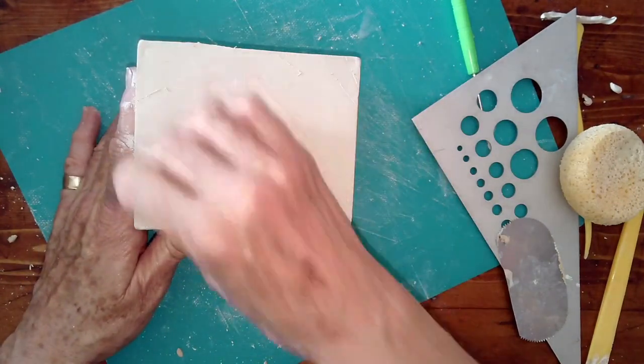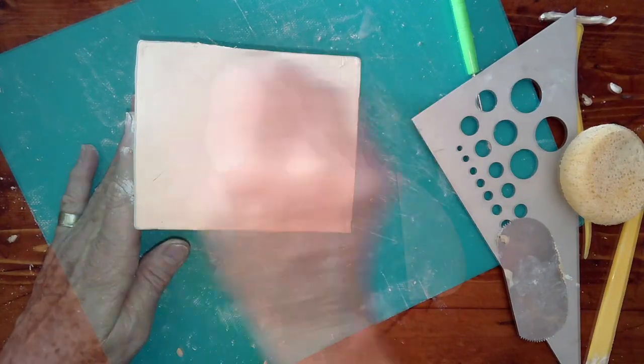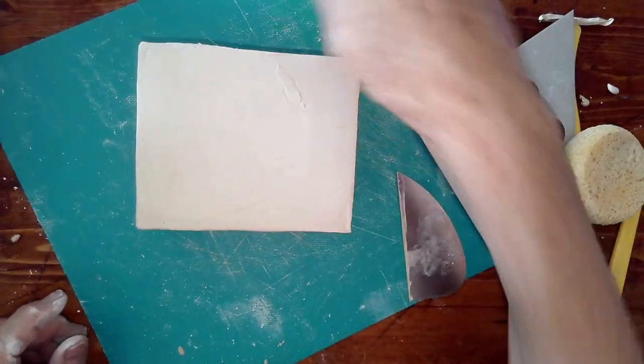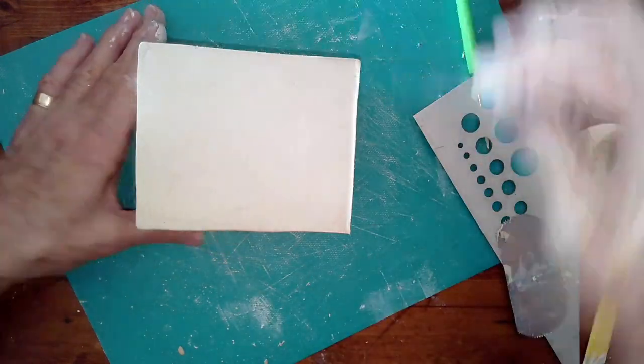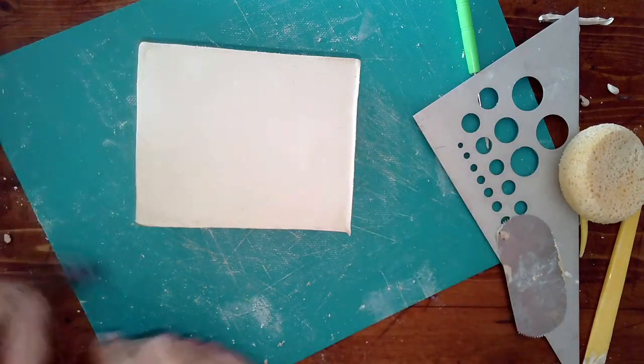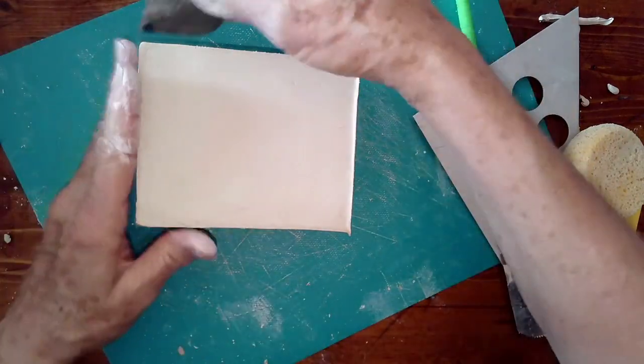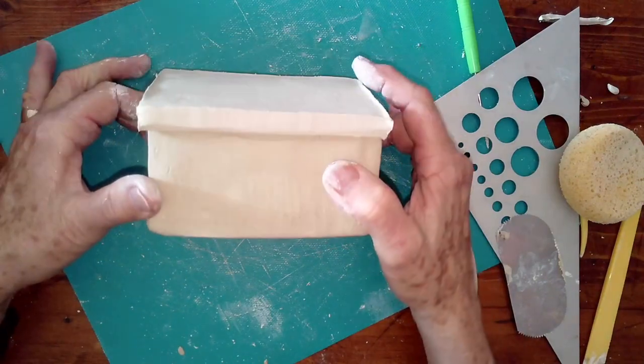Use your rib or straight tool to smooth out the top. And if you have any dips or dents, you can add a little bit of clay to fill those in. Essentially, you're just refining it. And there's your box.